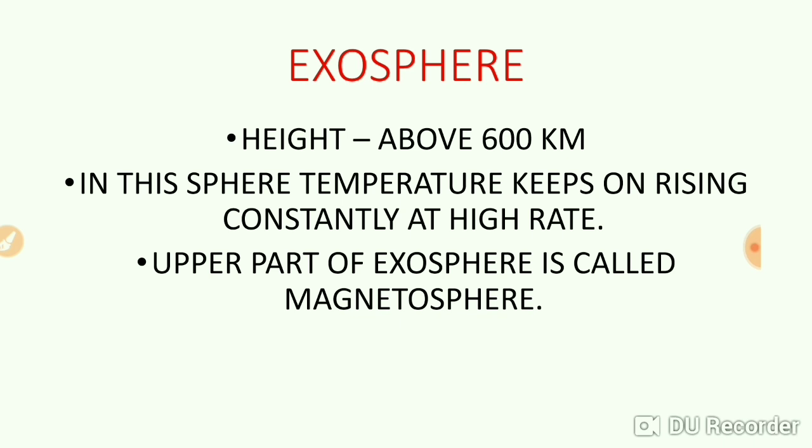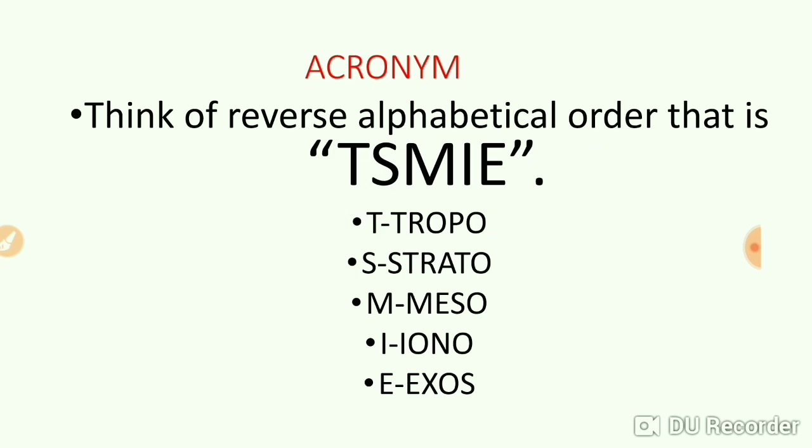Next is the exosphere. The height of the exosphere is above 600 kilometers. In this sphere, the temperature keeps on rising constantly at a high rate. The upper part of the exosphere is called the magnetosphere.